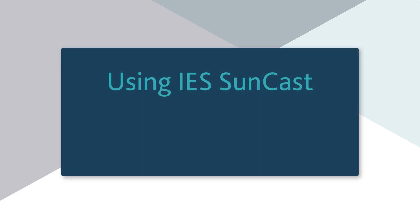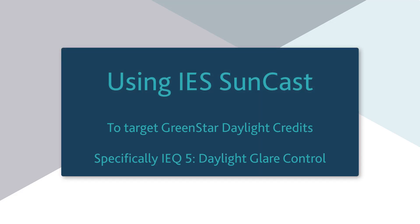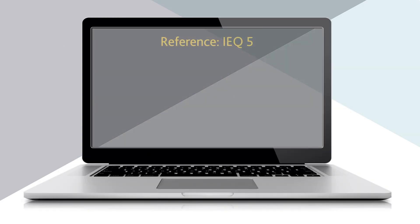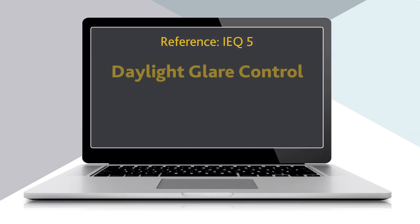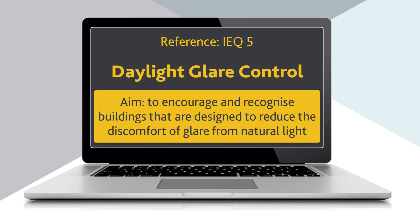Now let's look at Suncast for targeting Green Star credits, specifically IEQ5 for daylight glare control. We need to show that fixed shading devices shade the working plane from direct sun, at desk height, at 1.5m in from the centre of the glazing, for 80% of standard working hours.